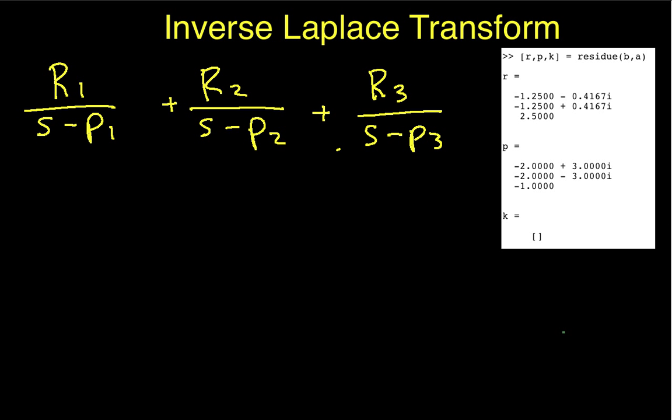So, we have two complex coefficients. This one, R1, this one, R2. And you'll notice that R2 is indeed the complex conjugate of R1. The imaginary part has a different sign.